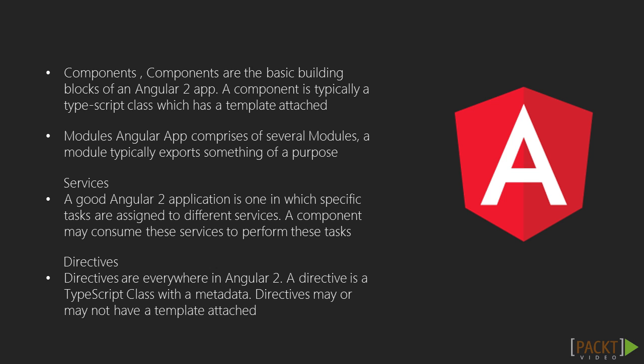Modules: an Angular app comprises of several modules. A module typically exports something of a purpose. In Angular 2, everything is wrapped inside ES6 modules, and we use ES6 import/export to use those modules. Services: a good Angular 2 application is one in which specific tasks are assigned to different services. A component may consume these services to perform data injection tasks.